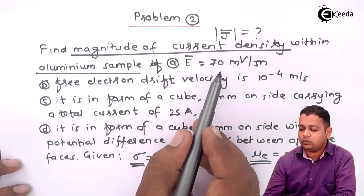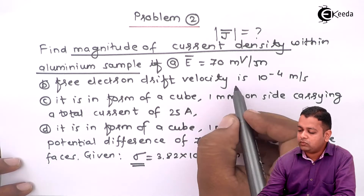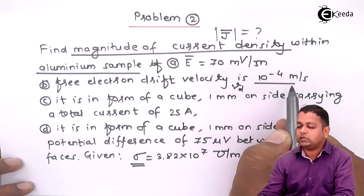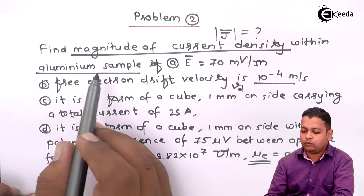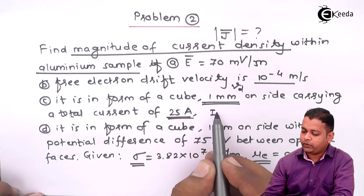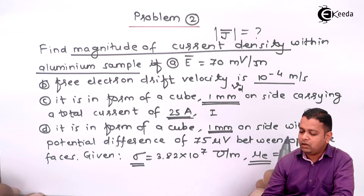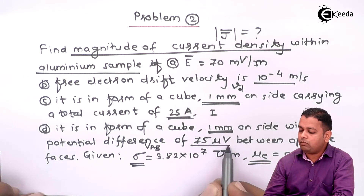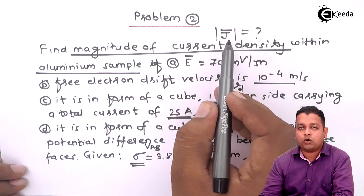In part A, electric field intensity is given as 70 millivolt per meter. In part B, we have free electron drift velocity V_D = 10⁻⁴ m/s. In part C, the aluminium sample is cubical with side length 1 mm carrying a total current I = 25 amperes. In part D, it is again cubical with 1 mm side and a potential difference V_AB = 75 microvolts between opposite faces. So let us begin solving the magnitude of current density |J-bar| for part A.